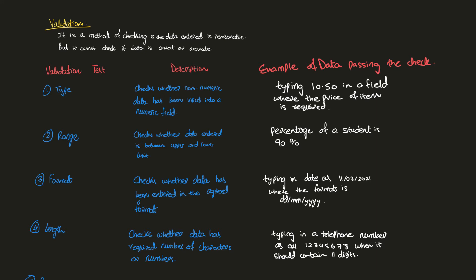Next we have format check, which checks whether the data has been entered in the agreed format. For example, a date of birth might require the format DD/MM/YYYY. Entering a date such as 11/03/2021 — 11 being the day, 03 being the month of March, and 2021 being the year — is a correct date format and will therefore be accepted.